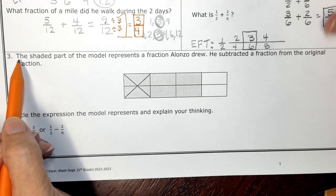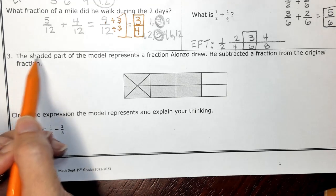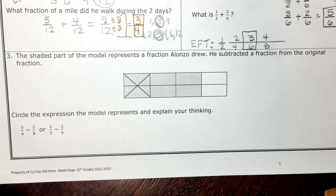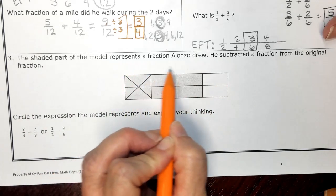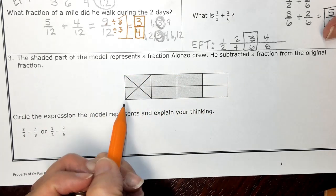So when I go back and read my question, it says the shaded part of the model represents a fraction that Alonzo drew. The first thing I want to do is I want to look at my model and I'm going to make some notes.